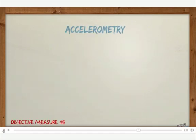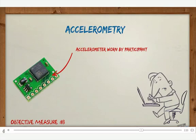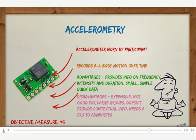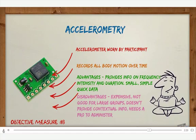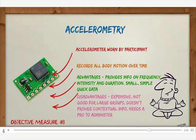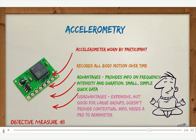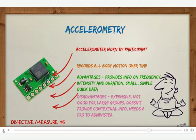The last objective measure is an accelerometer, a more high-tech piece of equipment worn by the participant that records all body motion over a certain period of time. It provides data on frequency, intensity, and duration shown on a graph. It's small, simple, and produces quick data. However, it's very expensive and not suitable for large groups. It also doesn't provide contextual information about what activity you're actually doing, and requires professional training to administer and interpret results.